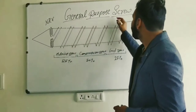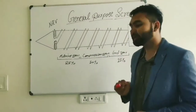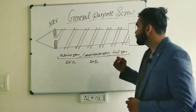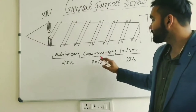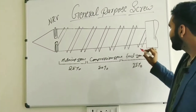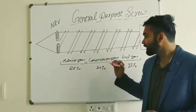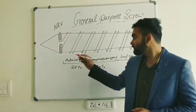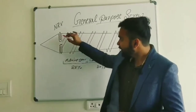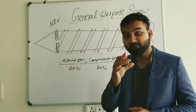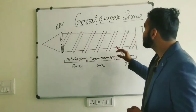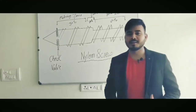Now coming to the general purpose screw — our first screw. The general purpose screw has three zones: feed zone, compression zone, and metering zone. The channel depth of the feed zone will be higher compared to other zones. Along with that, the NRV is there to prevent the backflow of material at the time of injection. This screw is mainly used for making products generally — most products are made from this screw.